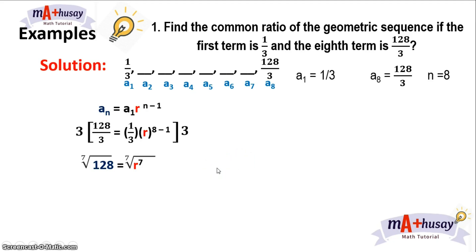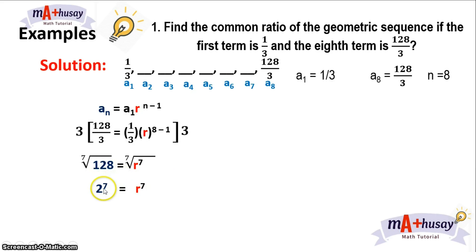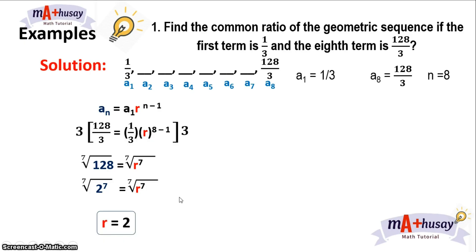Now to solve for r, we have to get the seventh root of both sides of the equation. We rewrite 128 in exponential form such that its exponent is 7. We know that 128 can be rewritten as 2 raised to 7. So if we get the seventh root of both sides, the 7s cancel and we have r equals 2. The seventh root of r to the power of 7 is r, so r is equal to 2.